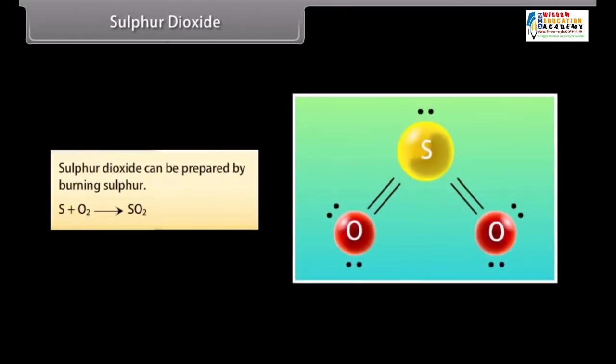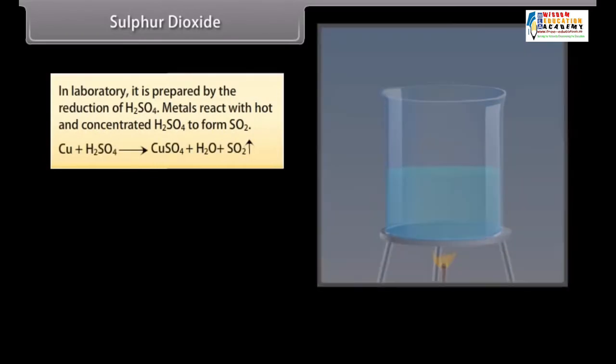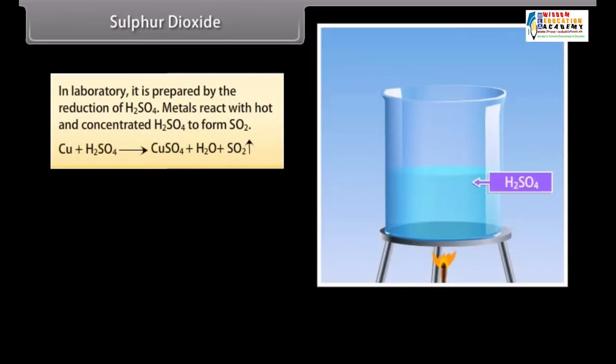Sulphur dioxide can be prepared by burning sulphur. In laboratory, it is prepared by the reduction of H2SO4. Metals react with hot and concentrated H2SO4 to form SO2.